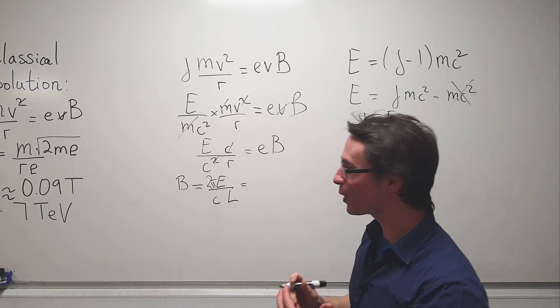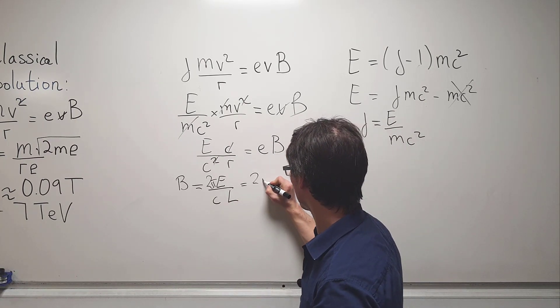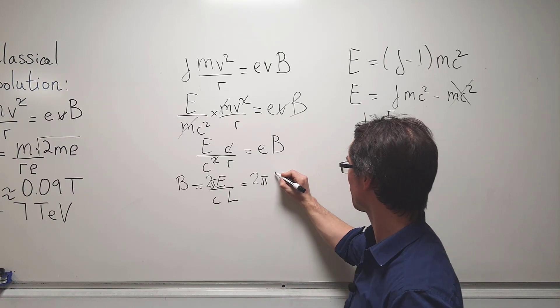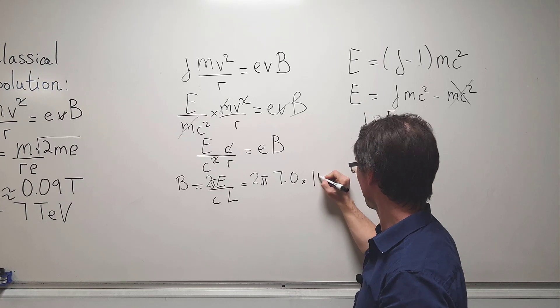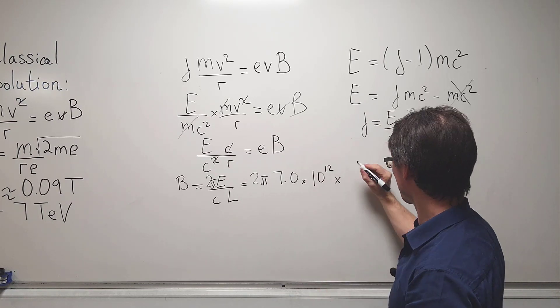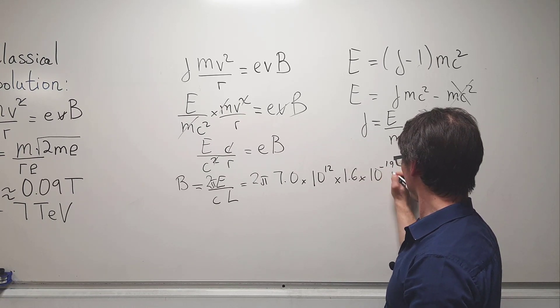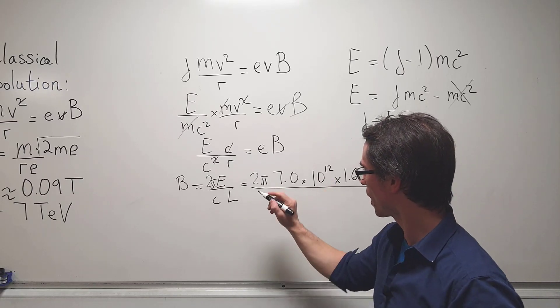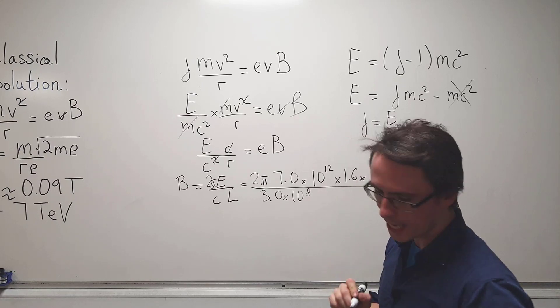And now we're ready to plug in some numbers to actually calculate the magnetic flux density. So we're going to have 2 pi and then an energy of 7 tera electron volts. So that's going to be 7.0 multiplied by tera is 10 to the 12 to convert electron volts to joules. This will be multiplied by the elementary charge, so 1.6 times 10 to the power minus 19, divide that by the speed of light, which is around 3.0 times 10 to the power of 8.